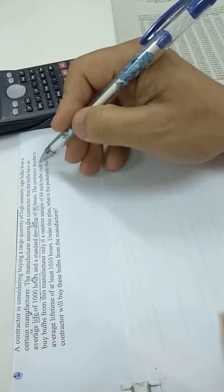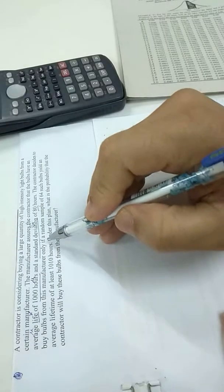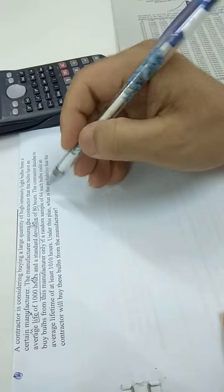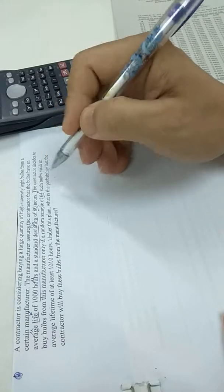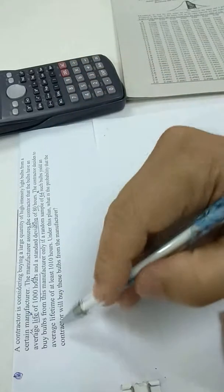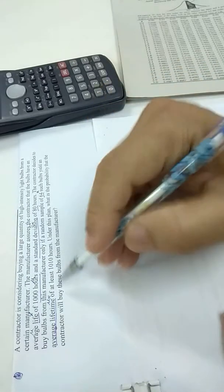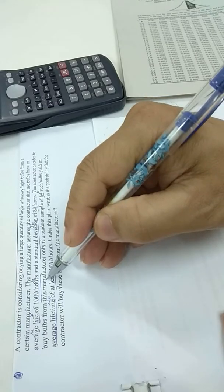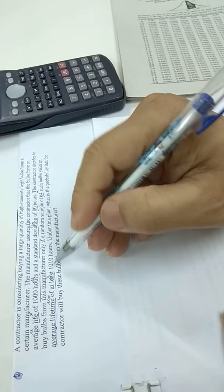The contractor decides to buy from this manufacturer only if a random sample of 64 such bulbs, sample size N, yields an average lifetime, mean of X, of at least 1010 hours.